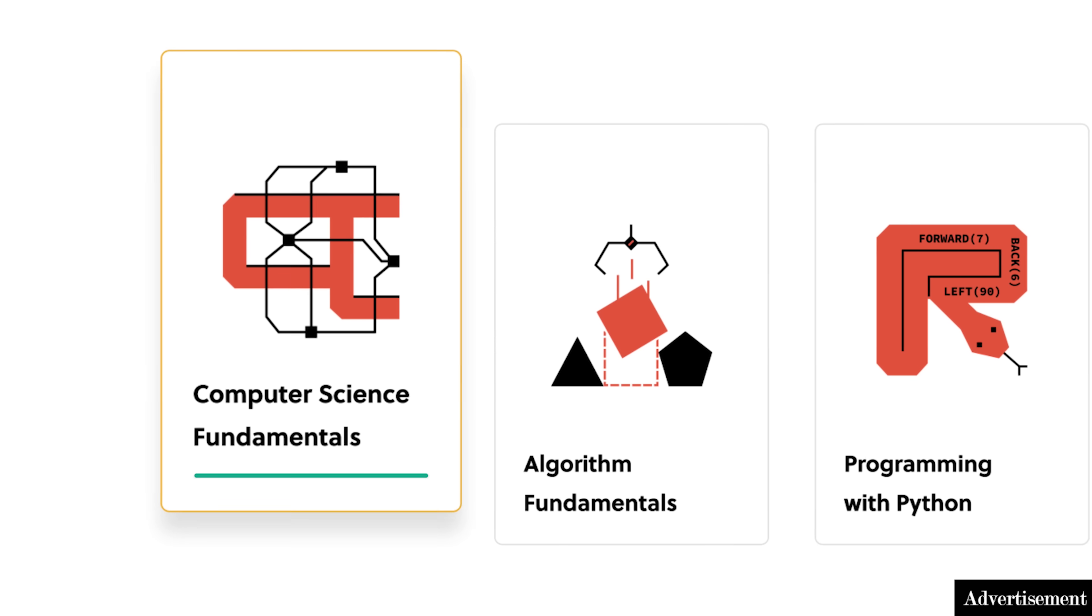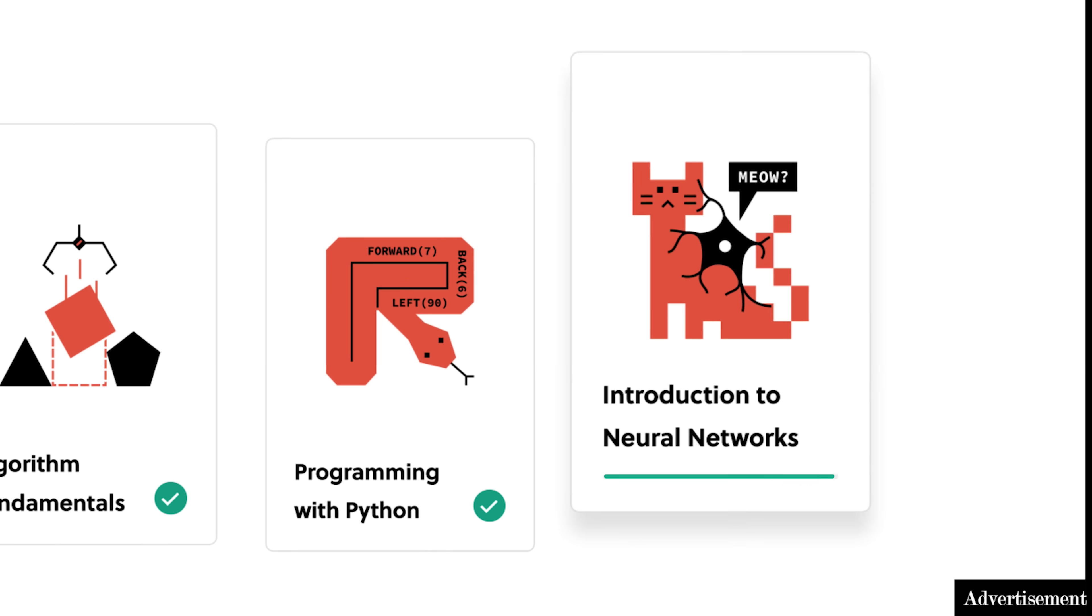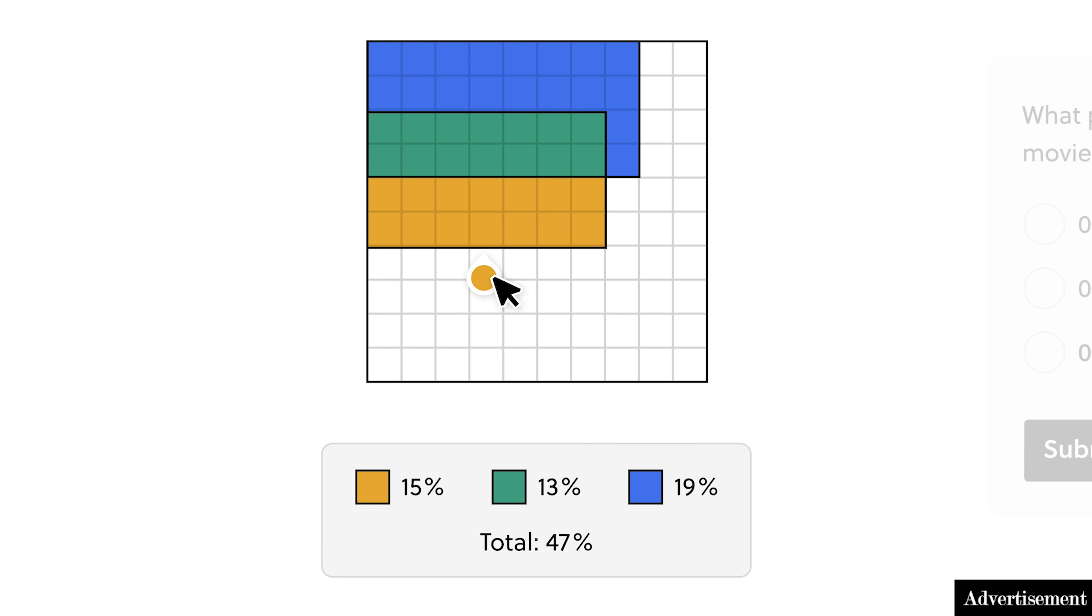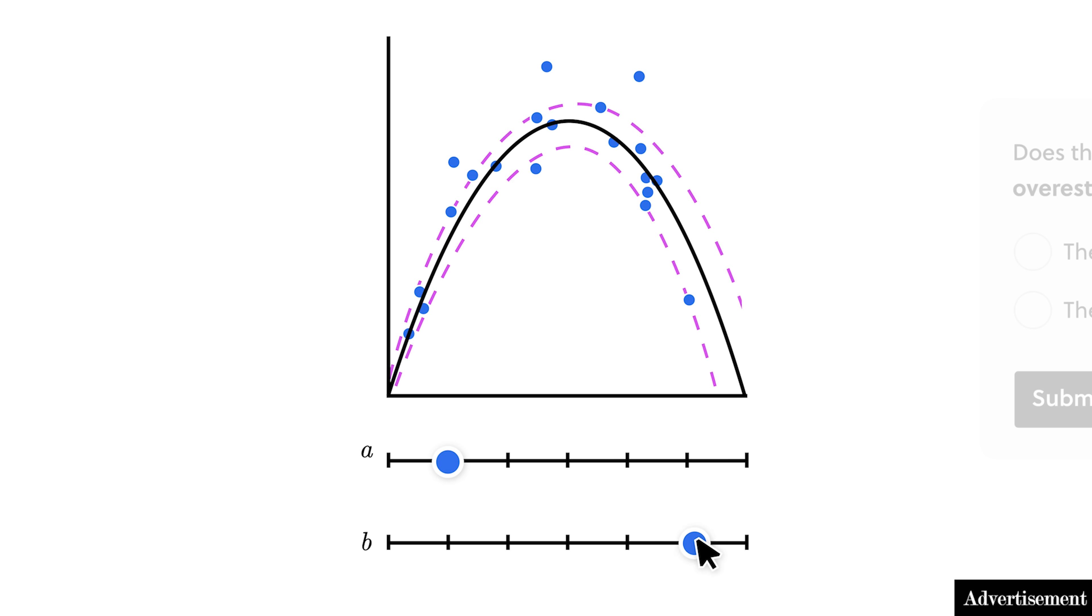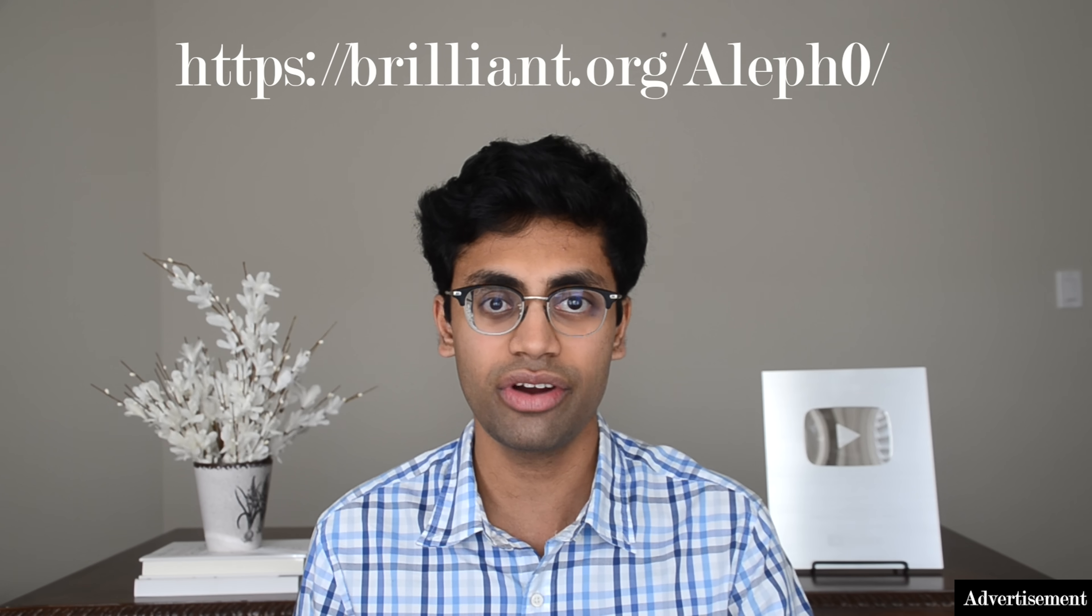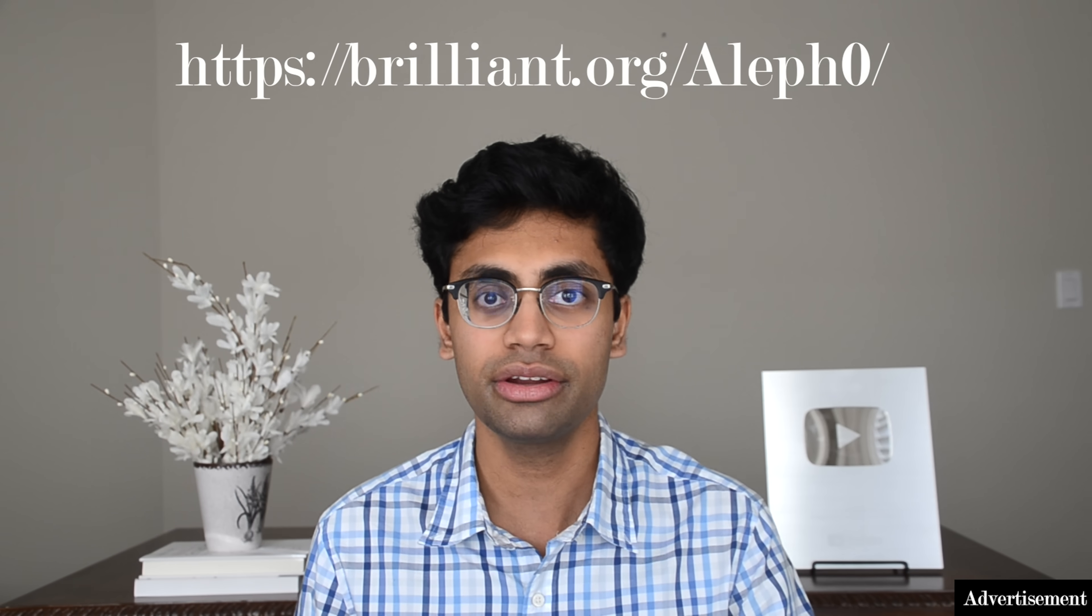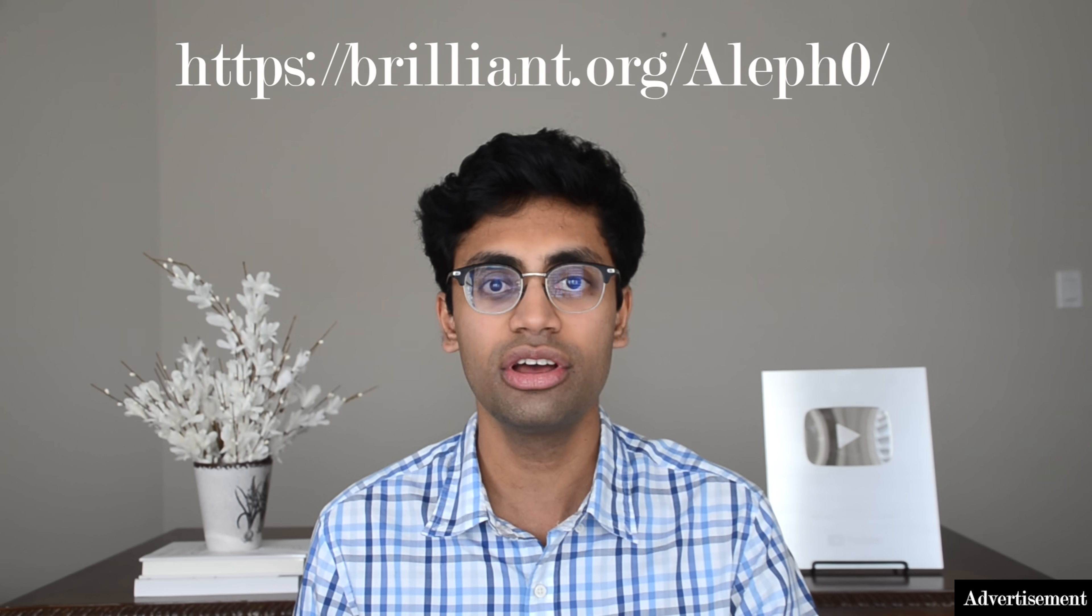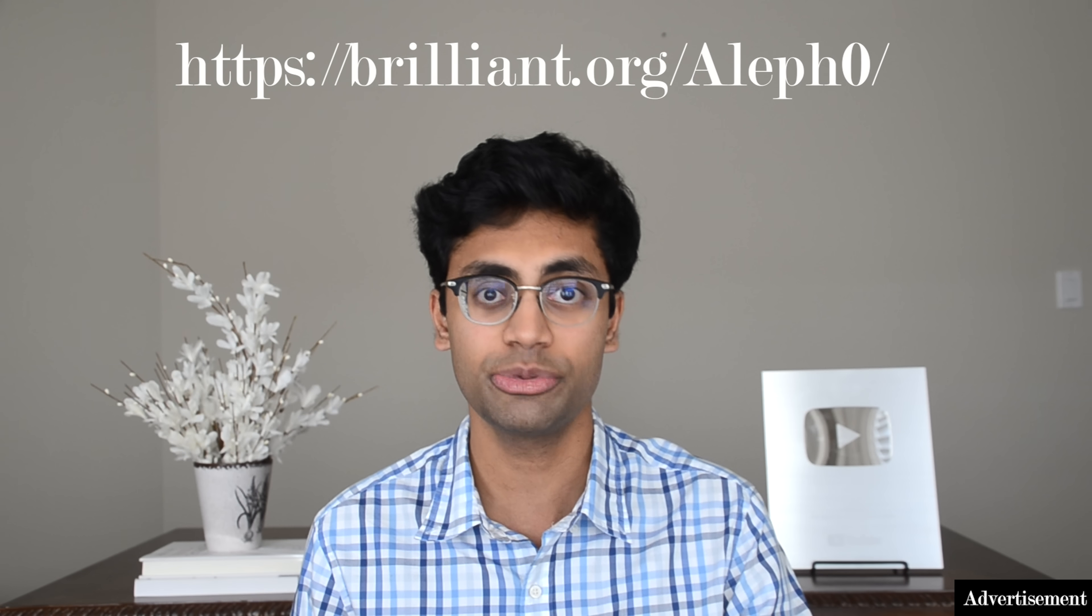They have loads of other courses as well in math, physics, and computer science. Whatever your skill level, Brilliant customizes content to fit your needs and lets you work at your own pace. To try everything Brilliant has to offer, free for a full 30 days, visit brilliant.org/alephzero, or click on the link in the description. The first 200 people to sign up will receive 20% off of Brilliant's annual premium subscription. Thanks to Brilliant for sponsoring this video, and thank you for watching.